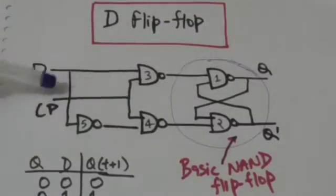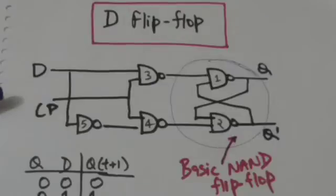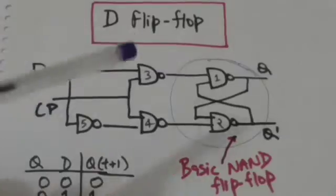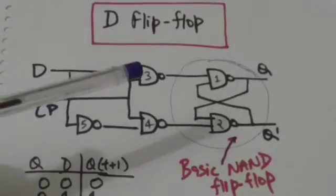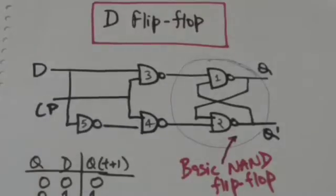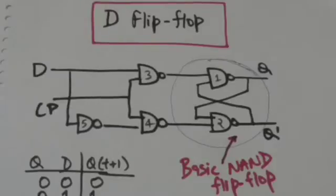CP denotes the clock pulse. As long as clock pulse CP equals zero, the output of gate three and gate four are one, which satisfies the requirement that both inputs of the basic NAND flip-flop should be one initially.